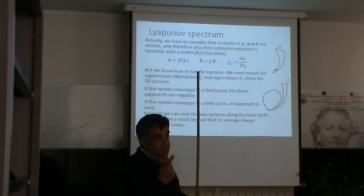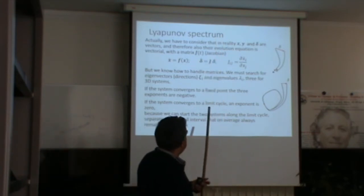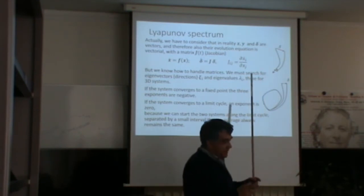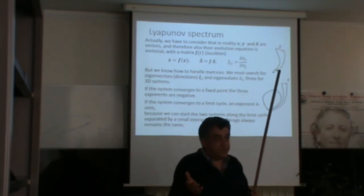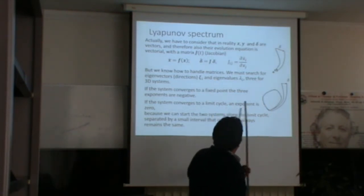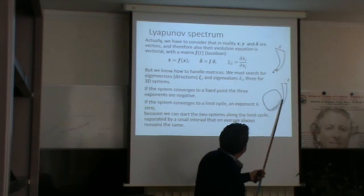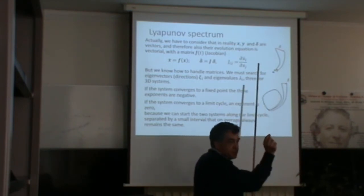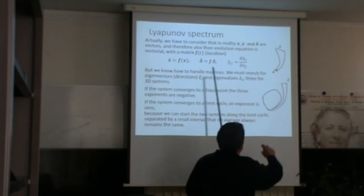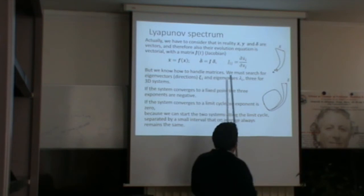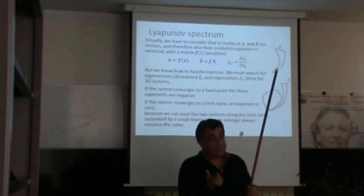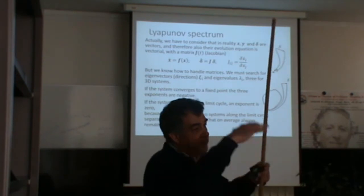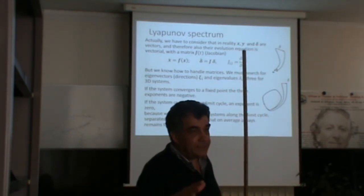You can reinterpret everything in terms of Lyapunov exponents. For a fixed point: whatever the initial difference, it goes to zero, meaning all Lyapunov exponents are negative. For a limit cycle: in the direction perpendicular to the cycle the trajectory converges (negative exponent), but along the cycle, two initial positions remain at roughly the same distance (zero exponent). So a limit cycle has one zero and the remaining exponents negative. For quasiperiodic motion on a torus, you have two zero Lyapunov exponents.